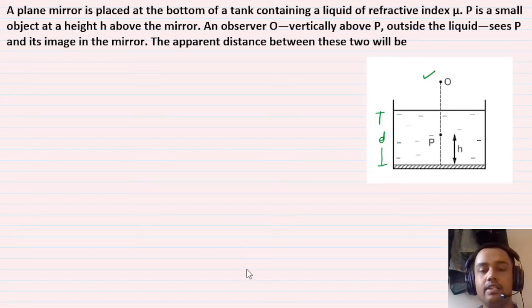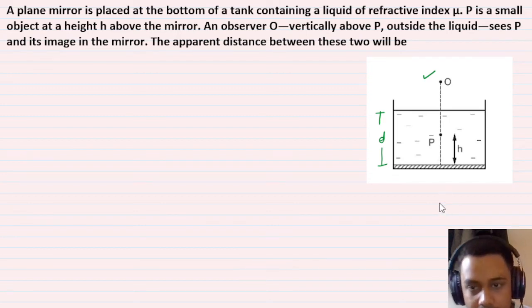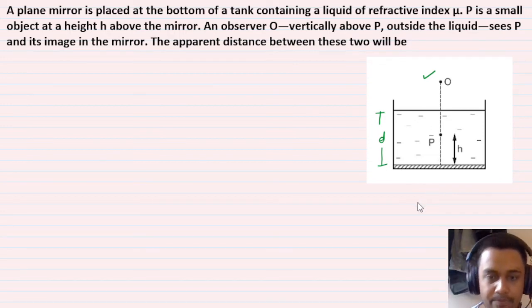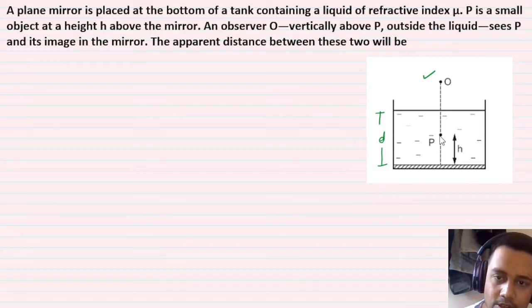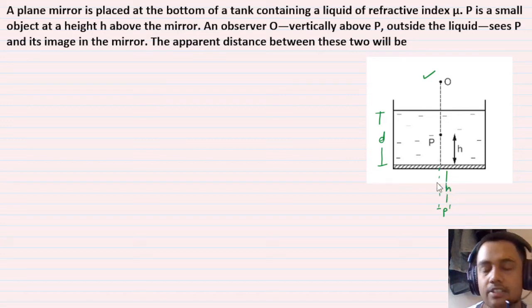Let's assume the depth of water is D. P's image will form at distance h below the mirror, because in a plain mirror, the image is formed as far behind as the object is in front of it.